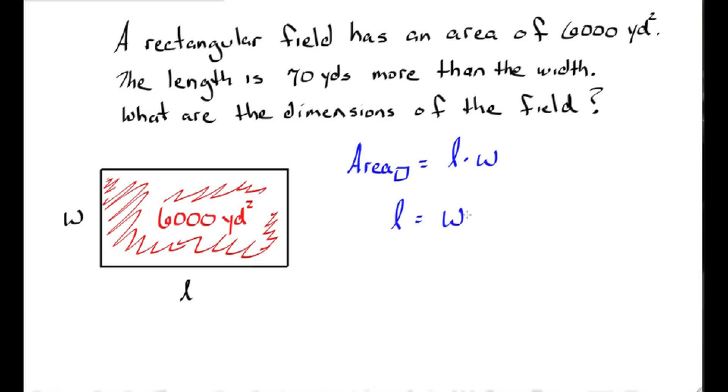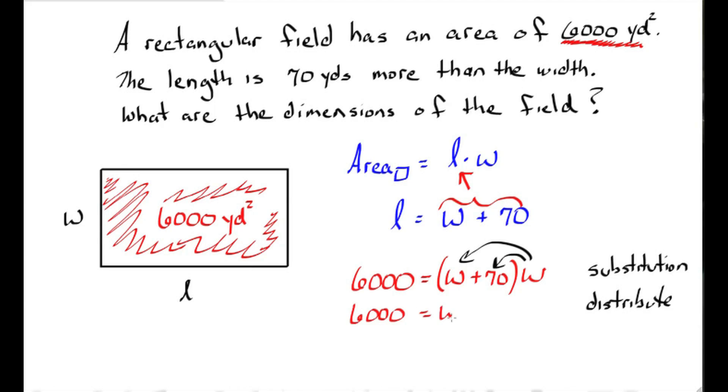So I'll substitute 6,000 for area and I'll substitute w plus 70 in for L, so we're only dealing with one unknown. We distribute the w and get 6,000 equals w squared plus 70w.